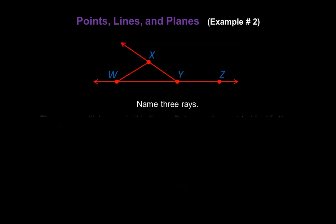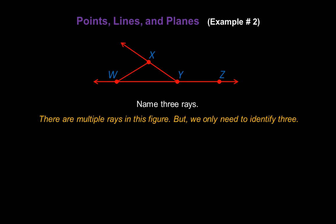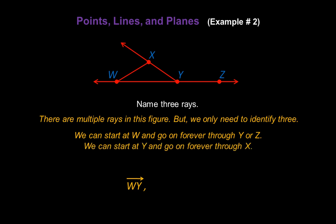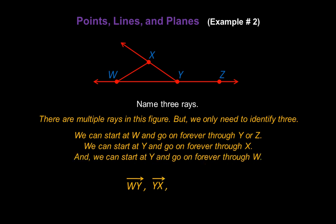Now in this example, let's name three rays. There are multiple rays in this figure, but we only need to identify three. We can start at W and go on forever through Y or Z, so let's call this ray WY. We can start at Y and go on forever through X — so let's identify that ray as YX. And we can start at Y and go on forever through W, so our third ray will be YW.